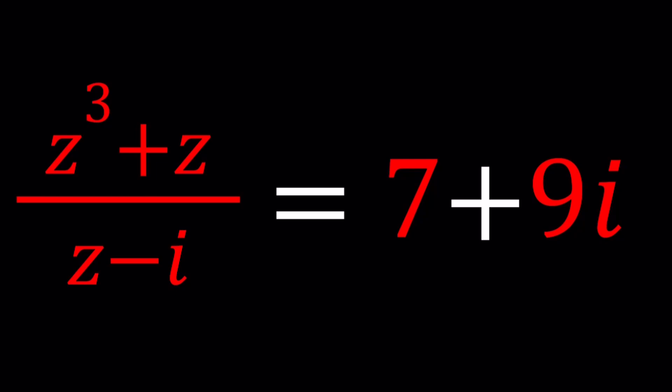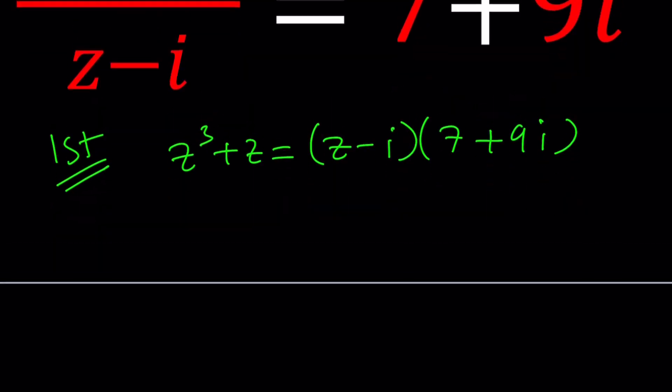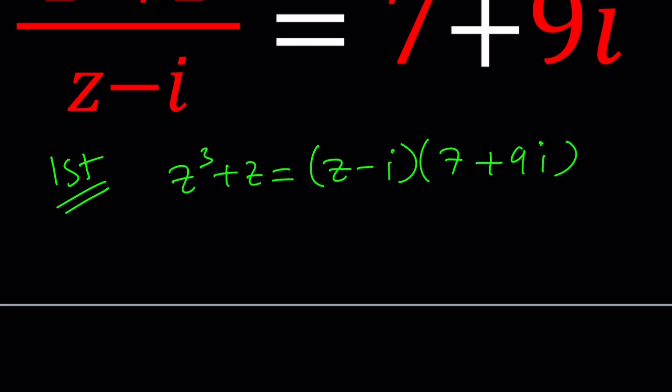I'll be presenting at least two methods and let's get to work. For my first method, I'm going to cross multiply z³+z. I'm going to write it as z-i multiply by 7+9i. We kind of have a cubic equation on the left so we can make this a full cubic and try to solve it. But I'm going to branch off a little bit after I show you how the cubic equation is going to proceed.